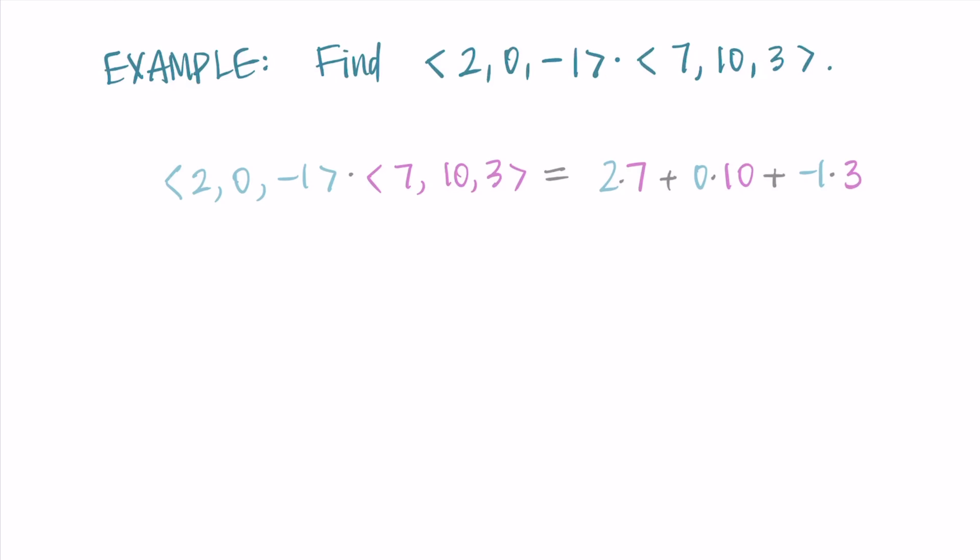Then I just simplify this. So I'm getting 14 plus 0 minus 3. And putting that together, I get 11 as my dot product.